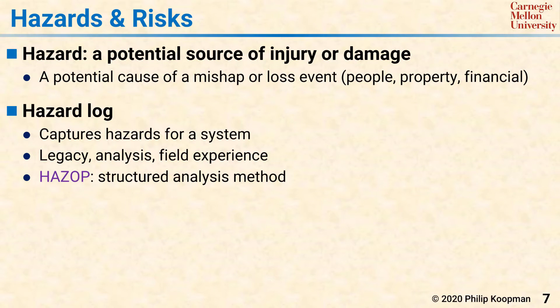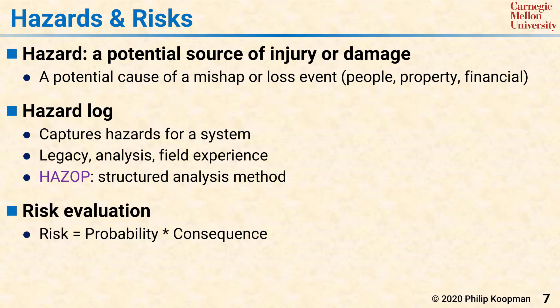Once hazards have been identified, each is assigned a risk. Intuitively, a risk can be thought of as the product of the probability of a mishap times the consequence of that mishap, often equated to dollars. Those per-mishap risks are added up to get the total expected cost of system failures.